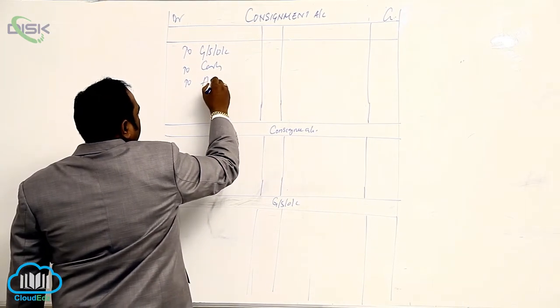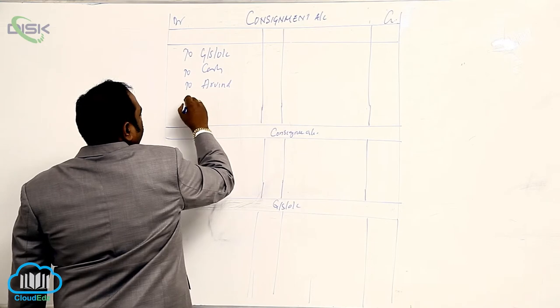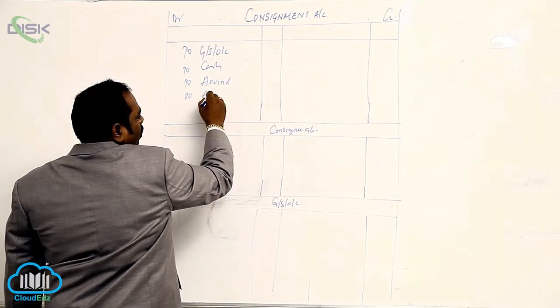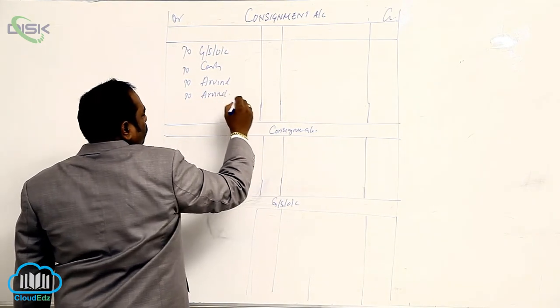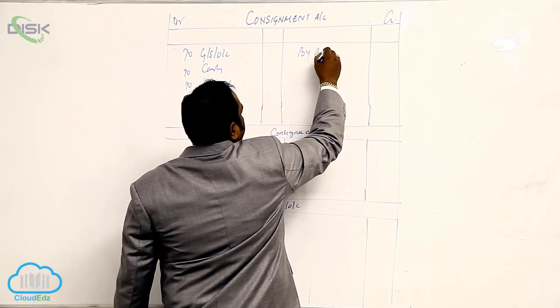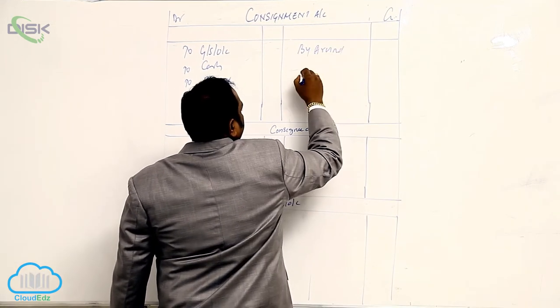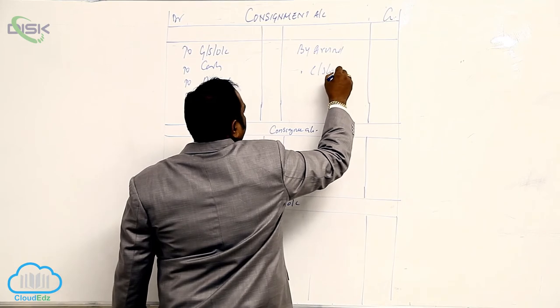To consignee, here consignee's name is Arvind. Right, Arvind, for expenses made by consignee. To Arvind is commission. By Arvind is sales. By consignment stock is for unsold stock.